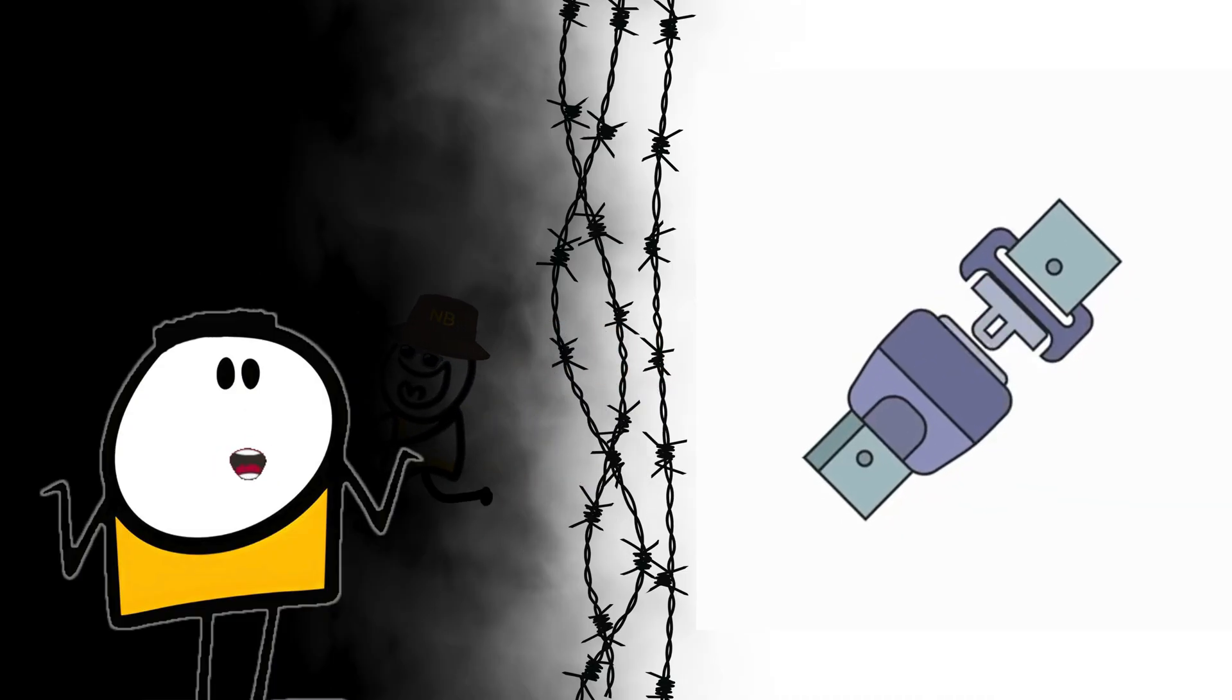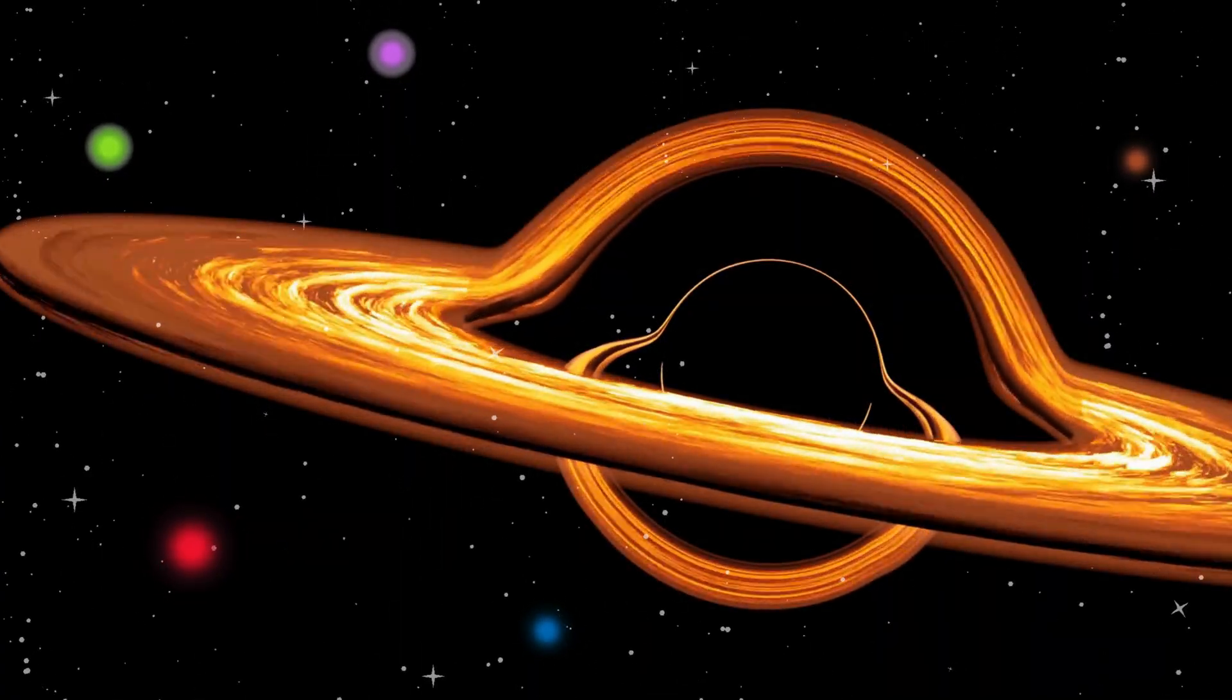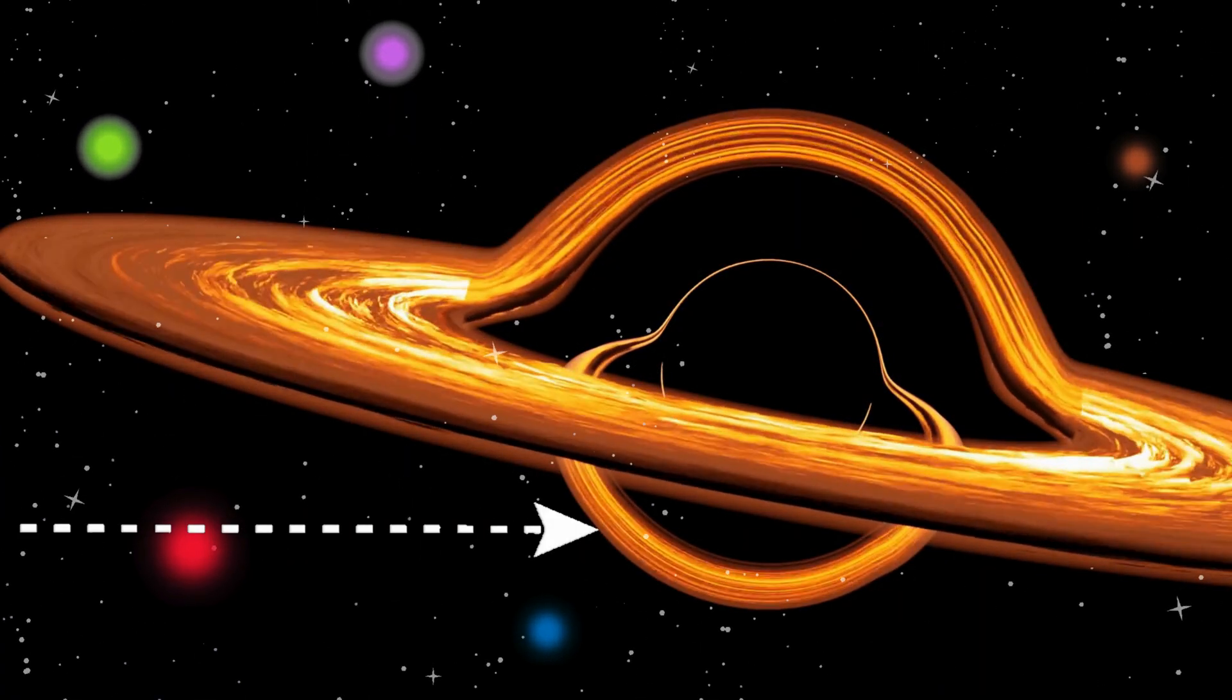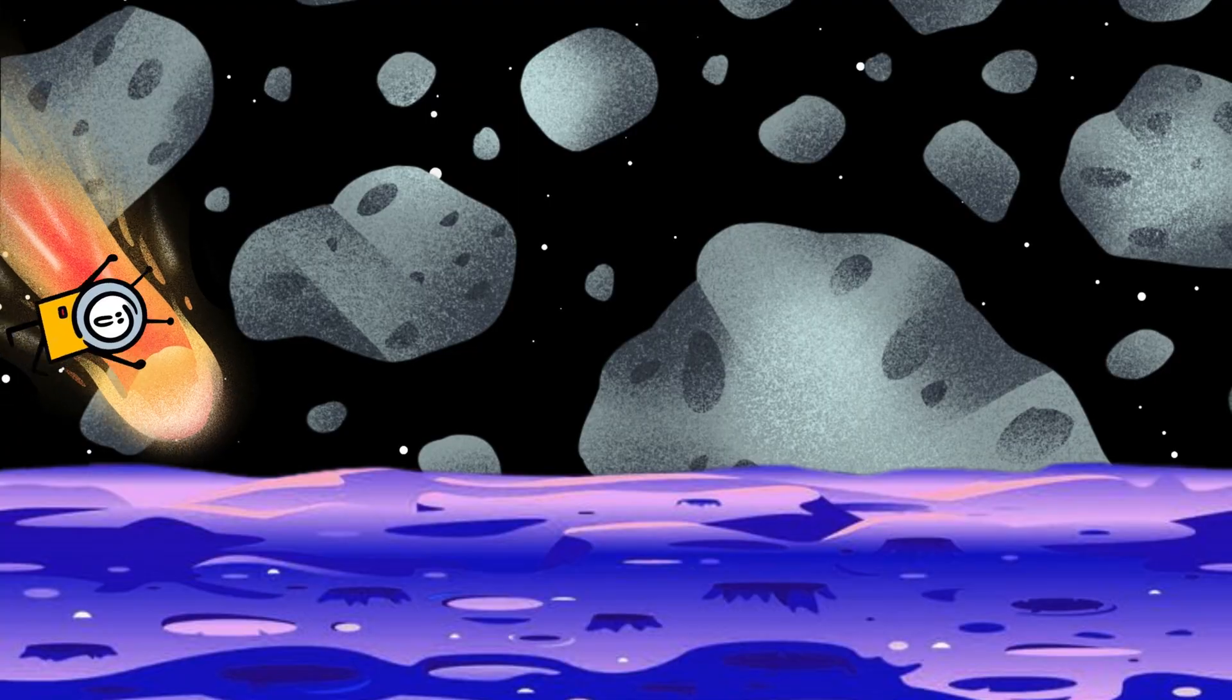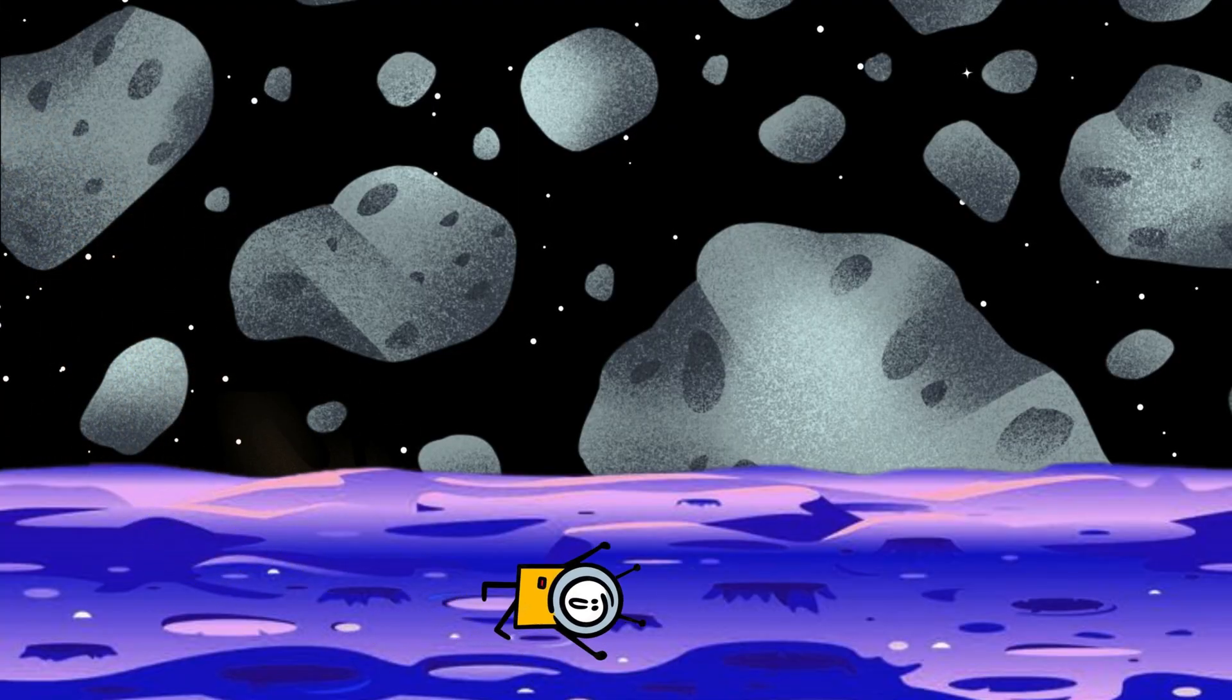Let's imagine you're falling into a stellar-mass black hole just a few dozen kilometers across, but with the mass of ten suns. At first, nothing much changes. You float through space, peacefully drifting toward your doom.